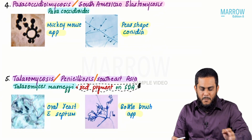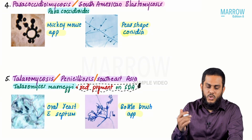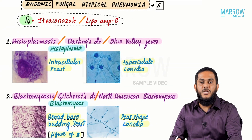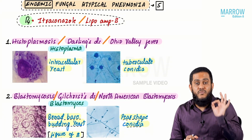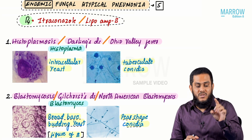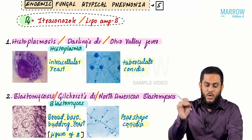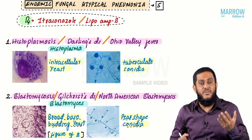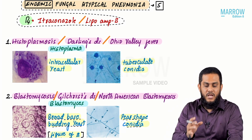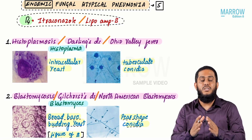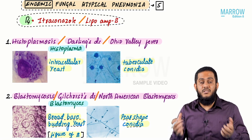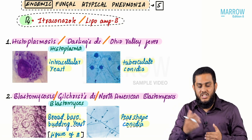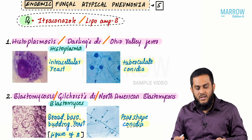To summarize: all five dimorphic fungi cause endemic fungal atypical pneumonia. Clinical manifestation is the same for all five — pneumonia with dyspnea, no consolidation. Treatment is the same — itraconazole or liposomal amphotericin B. They differ only in lab diagnosis: each has a distinct yeast form and mold form.